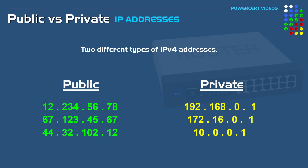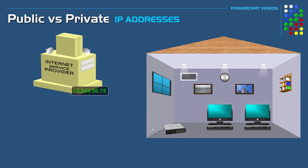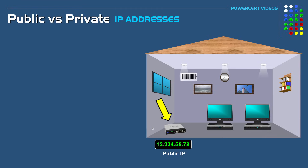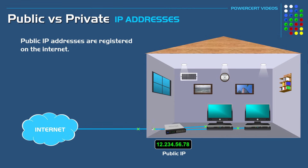Let's first talk about public IP addresses. When you order internet service from an internet service provider, they are going to assign your modem or your router in your home or business a public IP address. This public IP address is registered on the internet — it's what gives you access to the World Wide Web. So if you don't have a public IP, you cannot access the internet.